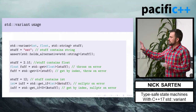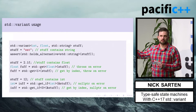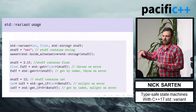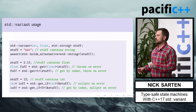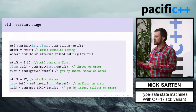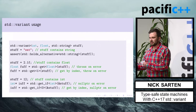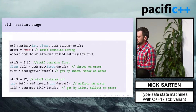You can also access the variant's content by index. Variant internally stores a type index indicating which type is currently stored, and you can use that to index across the types it can hold. There's also a dot-index method on variant to translate a type into an index.